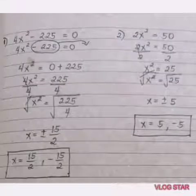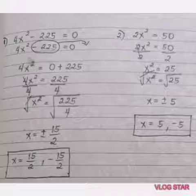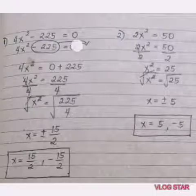Okay, in solving quadratic equations by extracting the square root, we have 4x² - 225 = 0.